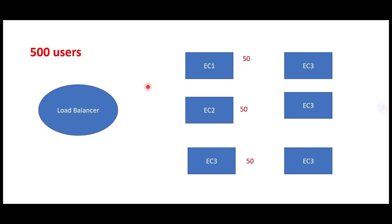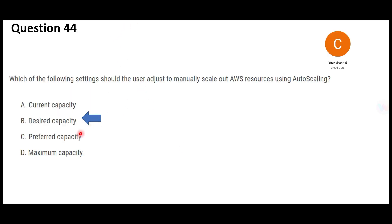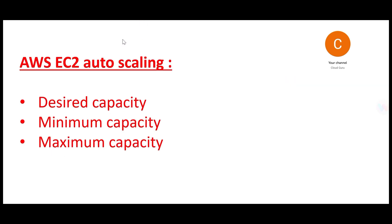In our example, you could set minimum to two instances and maximum to 10 instances. If two instances can handle 100 users, and you know usually 100 to 150 users log in, you set the desired capacity to three instances. This is the final answer — remember this as a thumb rule, it is very important and you can answer many questions if you understand it.